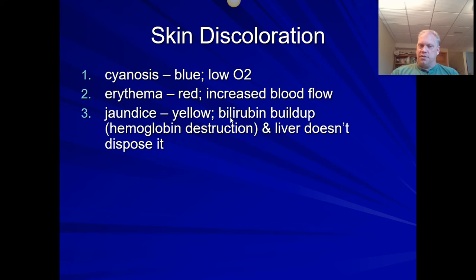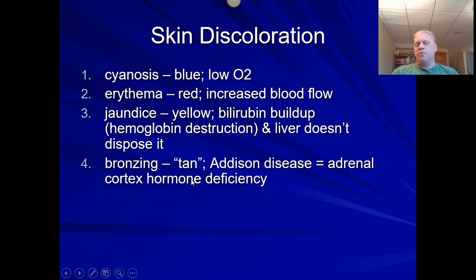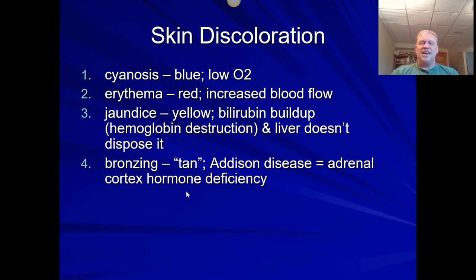A person with cirrhosis of the liver will have jaundice, and a tanning booth obviously wouldn't help there — it's a sign the liver isn't functioning. Another condition, Addison's disease — which we'll cover in the hormones chapter — involves bronzing of the skin: perpetually tanned skin as a symptom. JFK had this disorder. In advanced cases, dark stains even appear on the gum line. It's a sign of a hormone deficiency within the adrenal cortex — a metabolic issue where something's going wrong with the adrenal cortex.